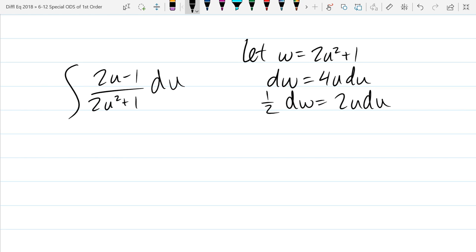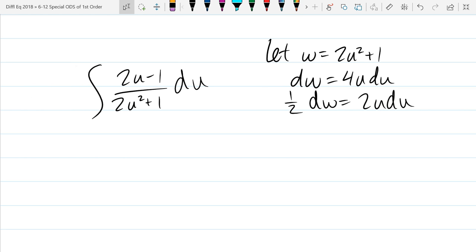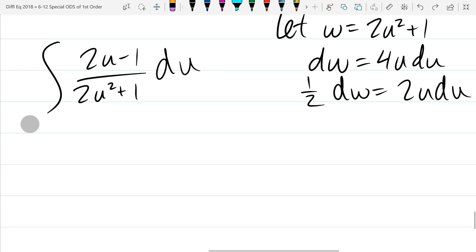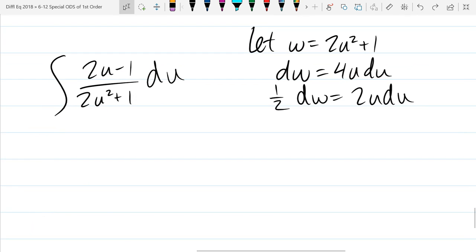So we got one half dw equals two u du. What's the problem with this w substitution? There's no two u du. There's almost a two u du. What's the problem though? Yeah, let's just erase it. Can't do that. That's not math. How do we properly get rid of it?